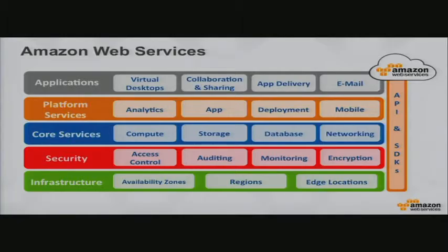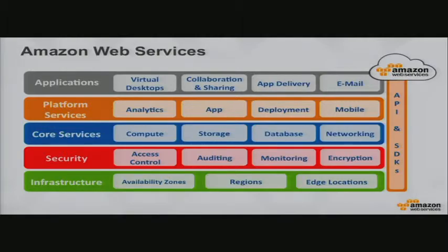Amazon Web Services is called Web Services because everything is a RESTful API. Everything can be addressed programmatically through SDKs, sitting on top of global infrastructure — the regions and availability zones. There's a security layer for access control and auditing. On top of that we build core services like virtual servers, databases, storage, and networking, and platform services that add value without you needing to manage servers. The analytics space is specifically what I want to dive into today.